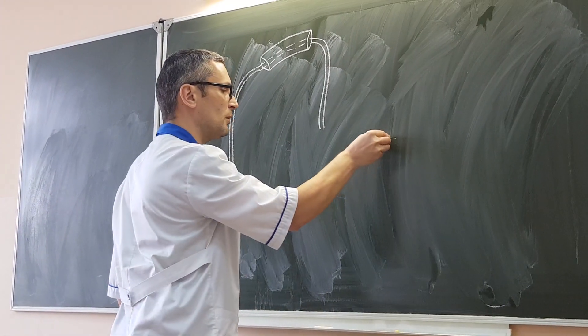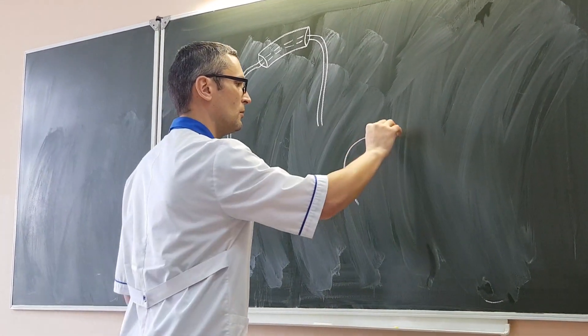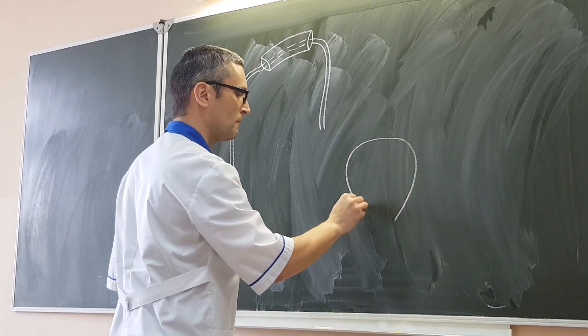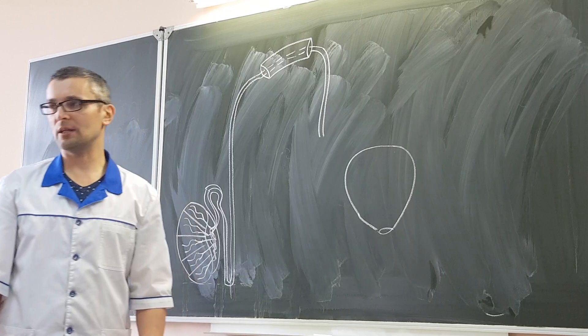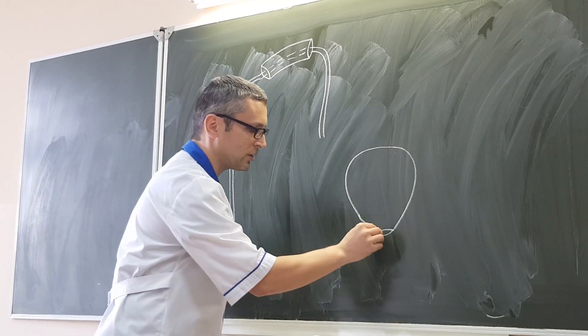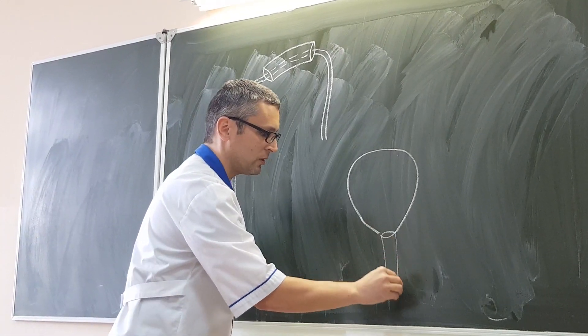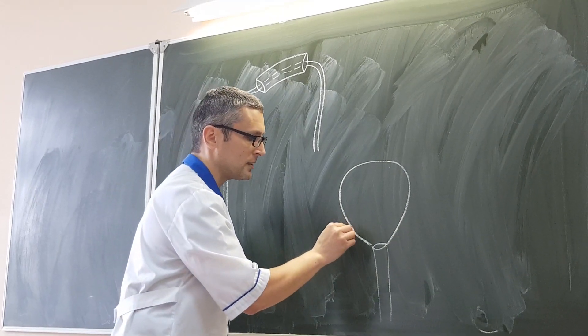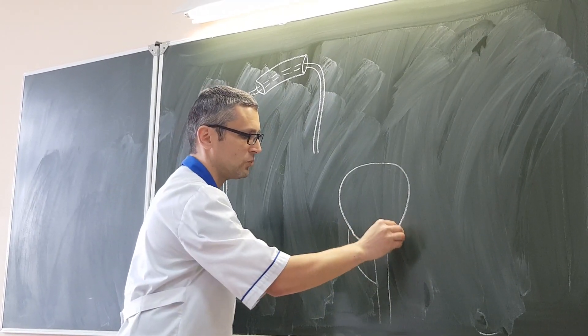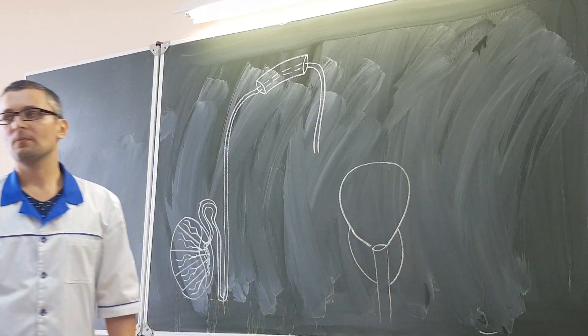So, here is the bladder, which has internal opening of the urethra. And then urethra begins, which goes downward. But lower part of male bladder has this structure, which is called prostate gland.